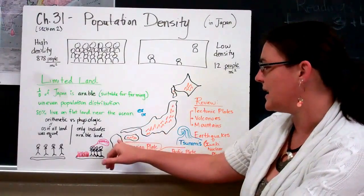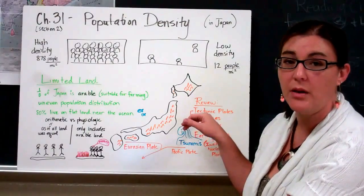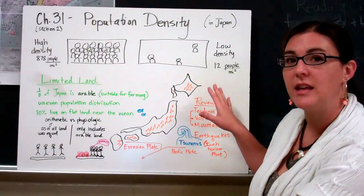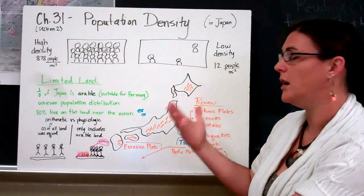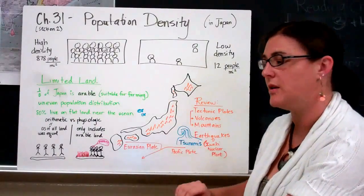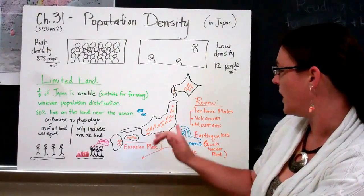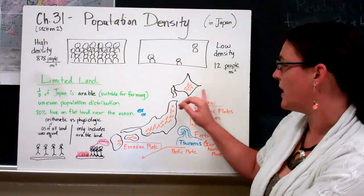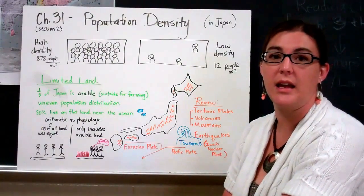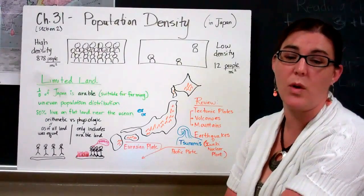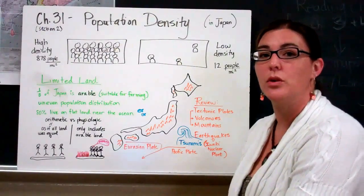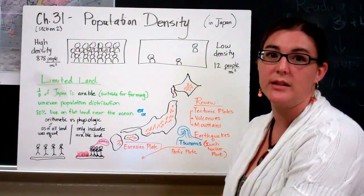Earthquakes that happen underwater then have the added consequence of creating these tsunamis or large waves that then wash ashore, which one of the tsunamis triggered by an earthquake hit northern Japan a couple of years ago, overcoming a nuclear power plant in the Fukushima prefecture. And that is an area that we'll look at a little bit more in detail that's still having some environmental consequences.